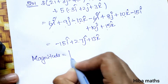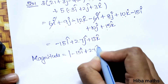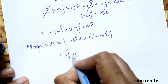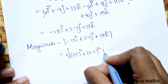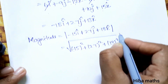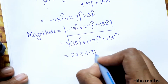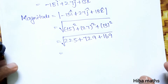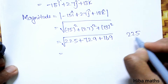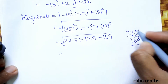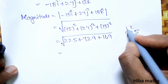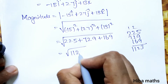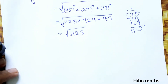Magnitude is equal to the modulus of −15i + 27j + 13k, which is the square root of (−15)² + 27² + 13² = √(225 + 729 + 169) = √1123. This is the magnitude value.